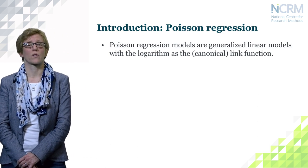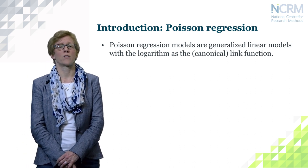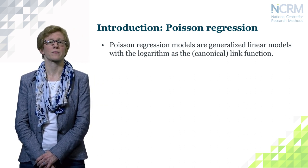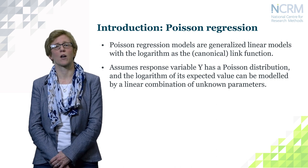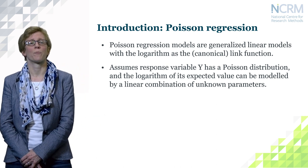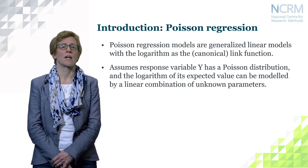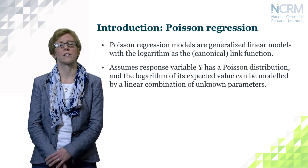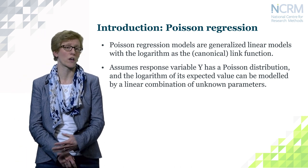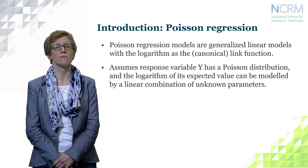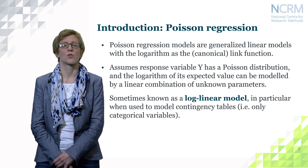Poisson regression is a form of generalised linear modelling. It uses the logarithm as the canonical link function. We assume that the outcome variable Y — the dependent variable — has a Poisson distribution, and the logarithm of its expected value can be modelled by a linear combination of unknown parameters, the beta coefficients — the regression coefficients in the model. It is sometimes referred to as a log-linear model, particularly when used to model contingency tables.